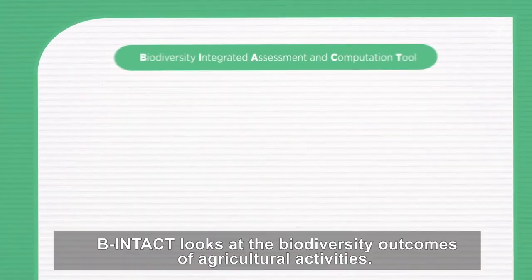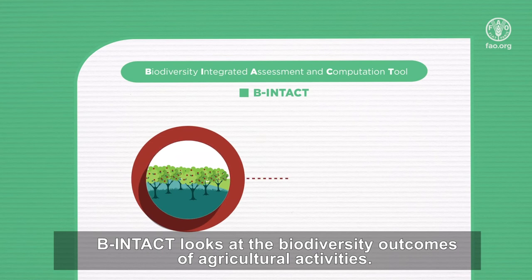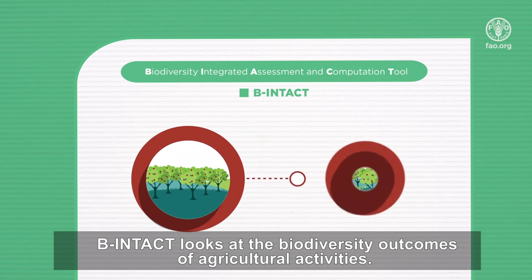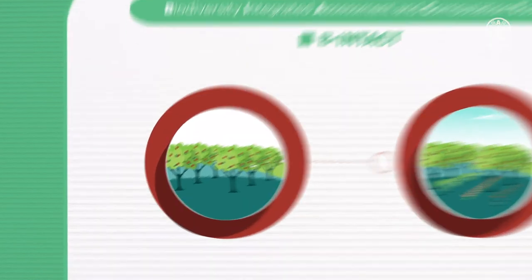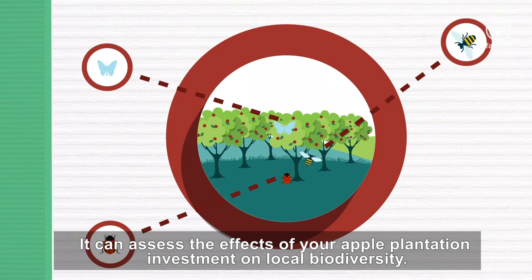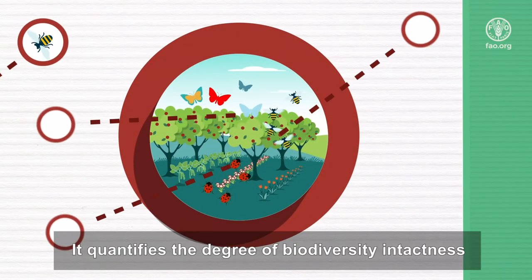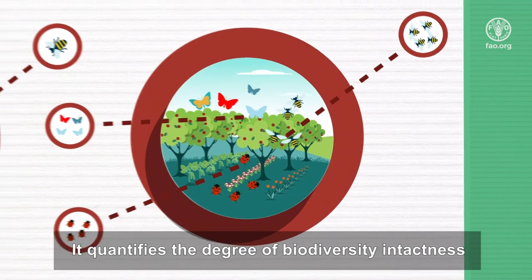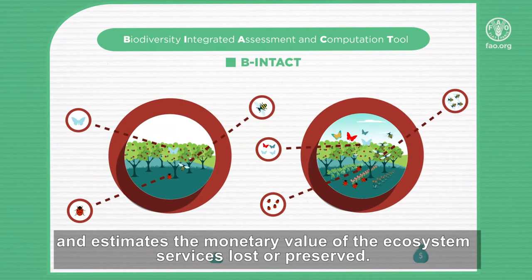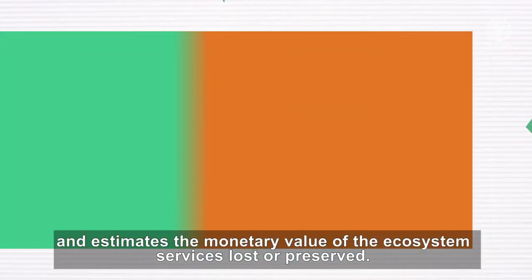INTACT looks at the biodiversity outcomes of agricultural activities. It can assess the effects of your apple plantation investment on local biodiversity, quantifying the degree of biodiversity intactness and estimating the monetary value of the ecosystem services lost or preserved.